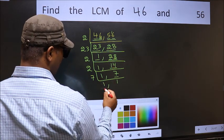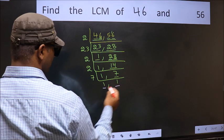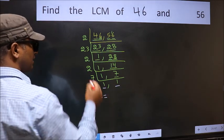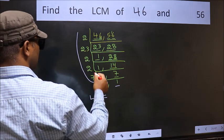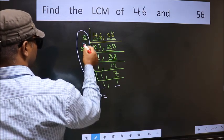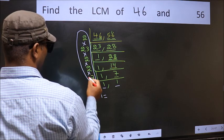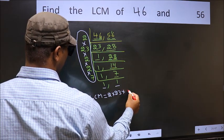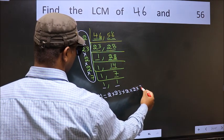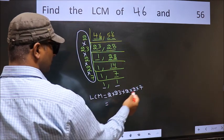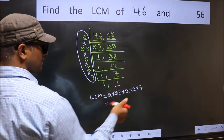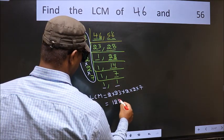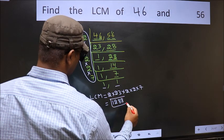So we got 1 in both places. So our LCM is the product of these numbers. That is 2 into 23 into 2 into 2 into 7. When we multiply these numbers, we get 1288 as our LCM.